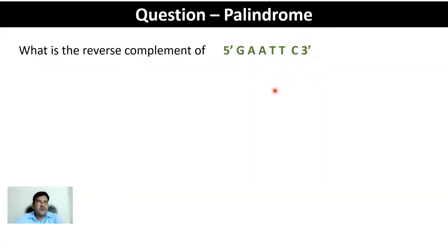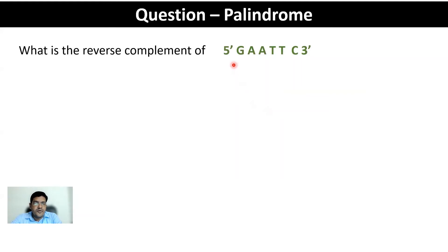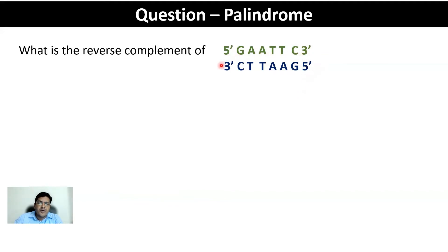By default, if you do not mention five prime and three prime, it is taken for granted that the first nucleotide is the five prime end and the last nucleotide is the three prime end. So, what is the reverse complement of five prime GAATTC? First, derive the complement using the base complementarity rule: G complements to C, A to T, A to T, T to A, T to A, C to G. We also know the minus strand has opposite orientation, so we mark the five prime and three prime ends accordingly.